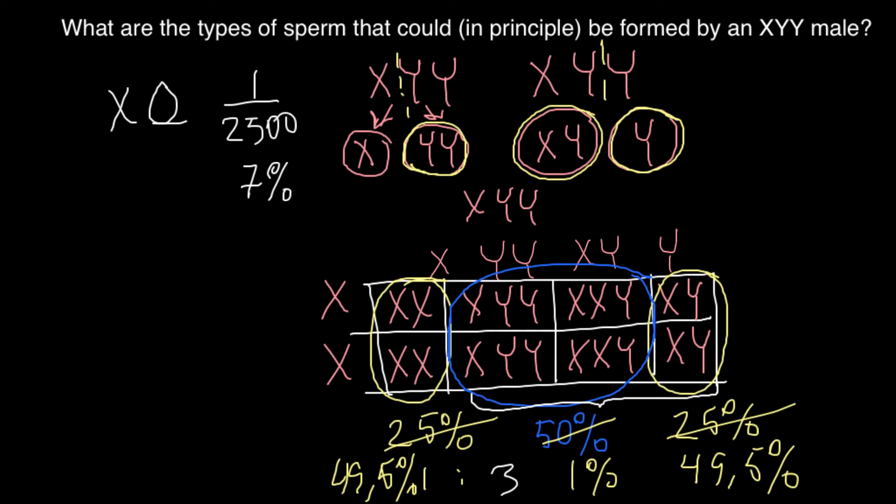People who have one extra Y chromosome, also sometimes called super males, are actually phenotypically normal. These people are fertile and they just may be a little bit taller than normal males who are XY, by average about three inches, this is about seven to eight centimeters.